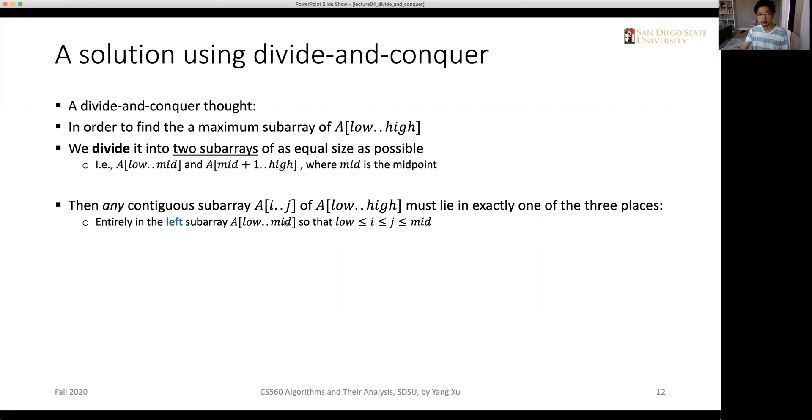Such a subarray must lie in exactly one of three places or three conditions. First, it is entirely in the left subarray from A[low] to mid. That says the index for the contiguous subarray i and j must be between low and mid.